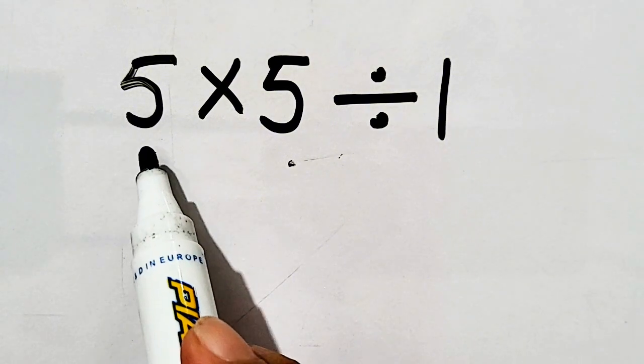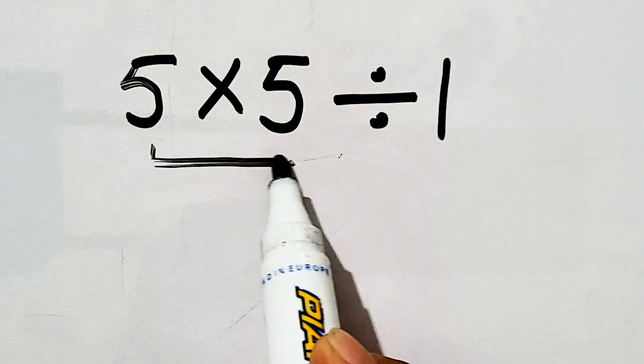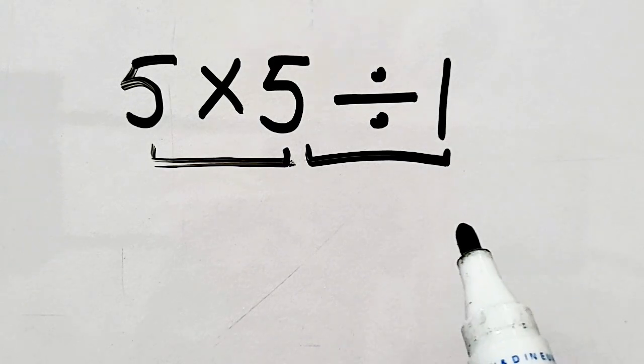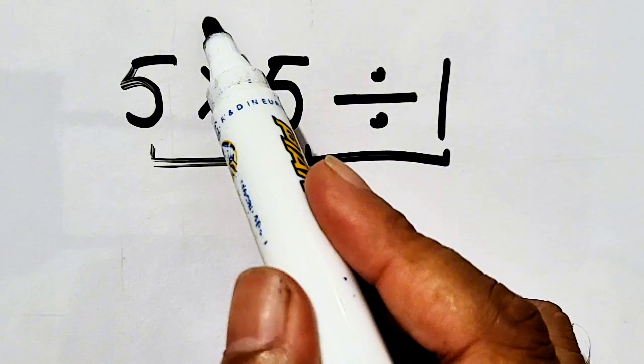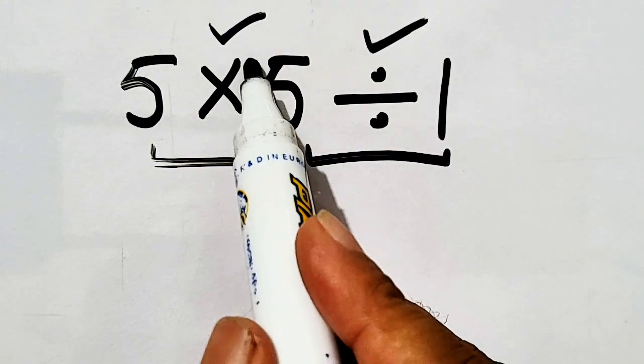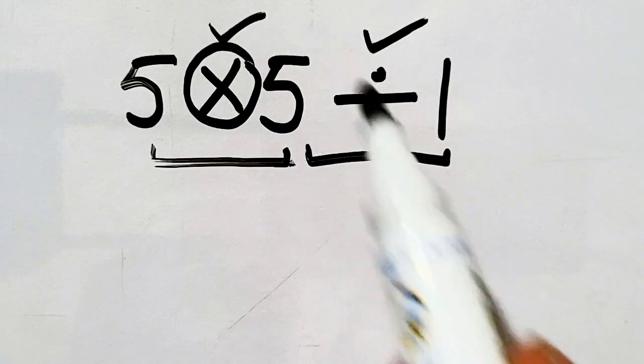Another question is here, 5 times 5 divided by 1. A question arises, first of all, do we solve multiplication or division? According to PEMDAS, we will perform the operation first which is at left.